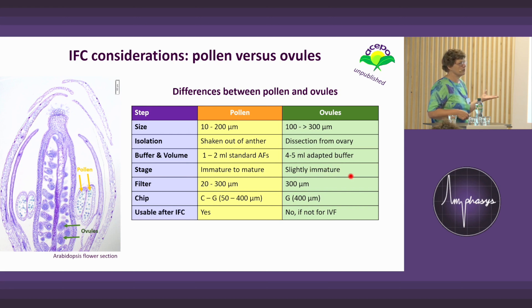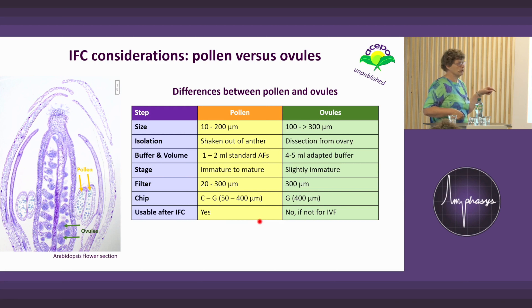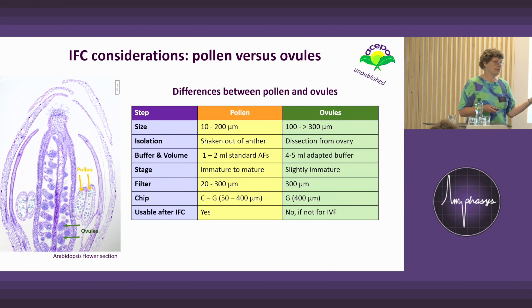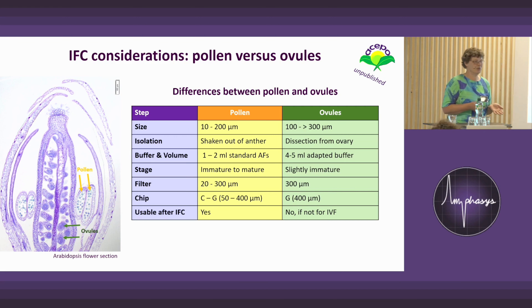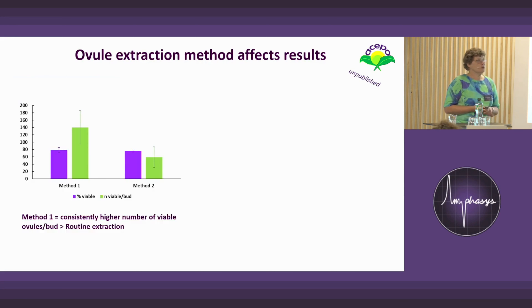You need much more buffer for ovules. I cannot use mature ovules in my case because they are just too big — I have to use a 300 micrometer filter and I need the 400 micrometer chip. A difference from pollen is that after measurement you can collect pollen and it's still fine for germination assays or even pollination. That's not possible with ovules because they have been disconnected from their feeding tissue and are dead, unless you want to use in vitro fertilization.